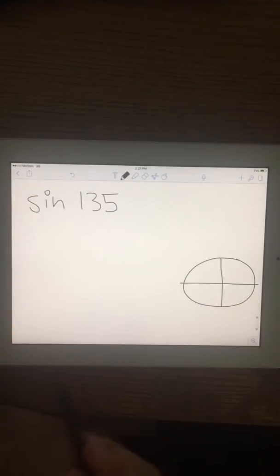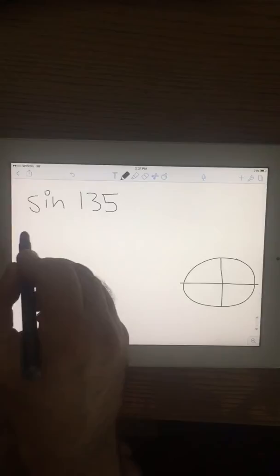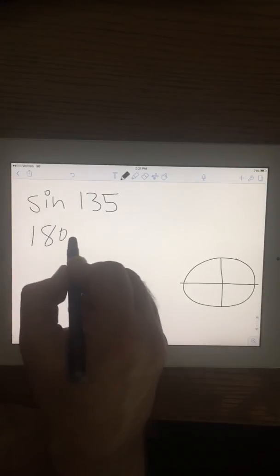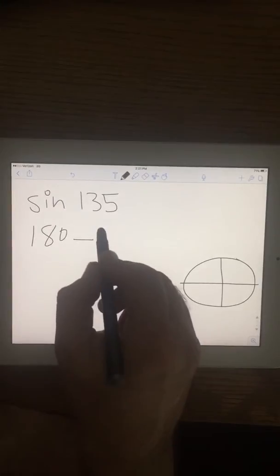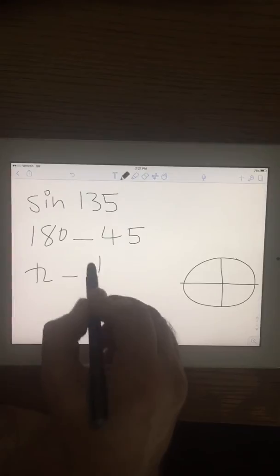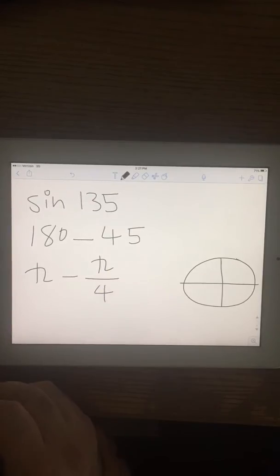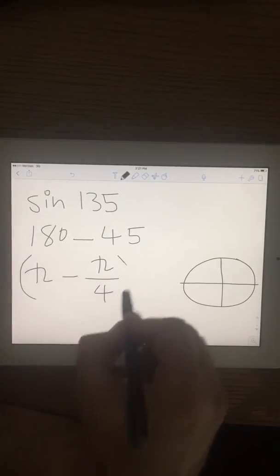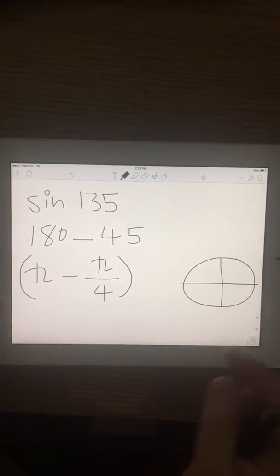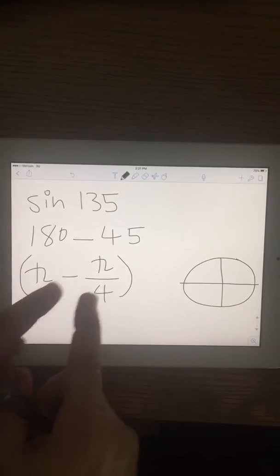So notice 135 is 180 minus 45. That means pi minus pi over 4. So sine of 135 is the same as sine pi minus pi over 4.